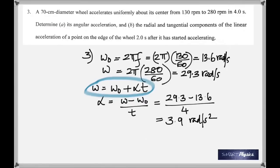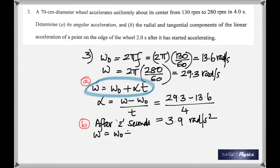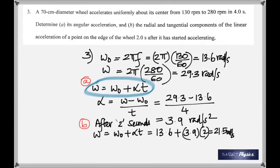Now we have to find the radial and tangential components — and that is after 2 seconds, so be careful. After 2 seconds, the angular speed started at 13.6, plus alpha times 2, which is 3.9 × 2, giving 21.5 radians per second.